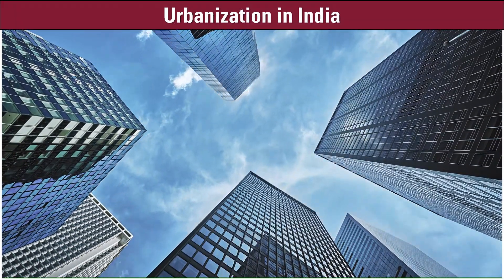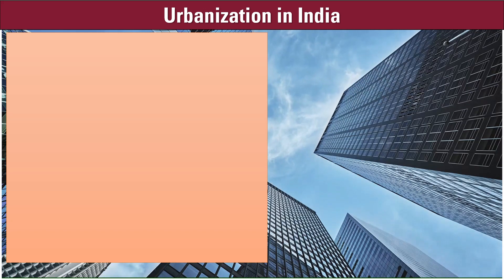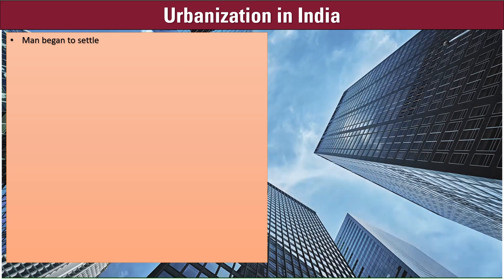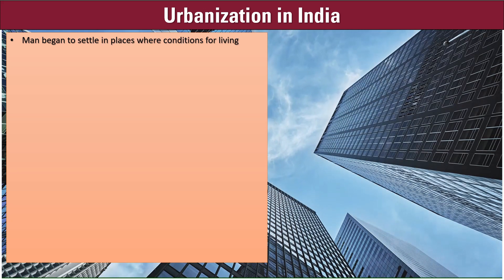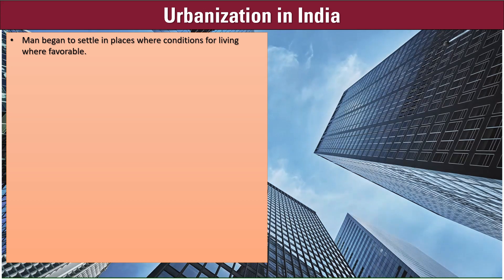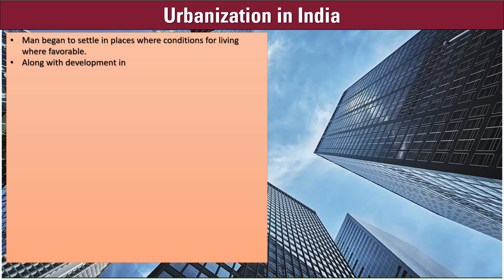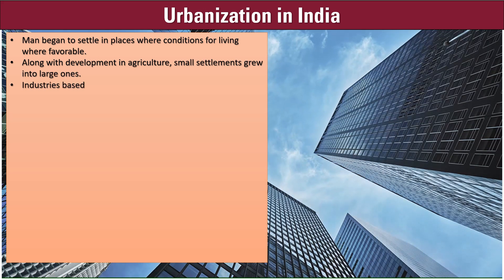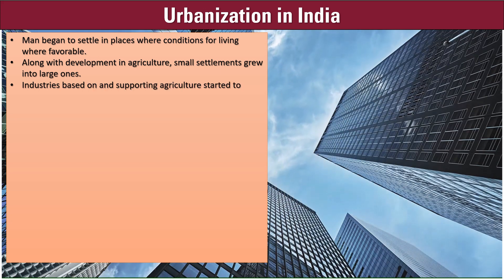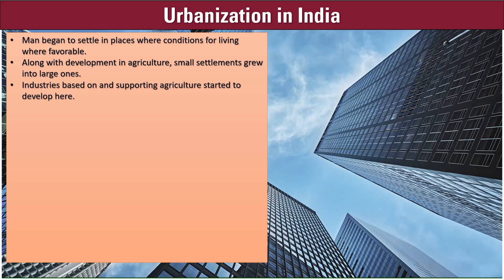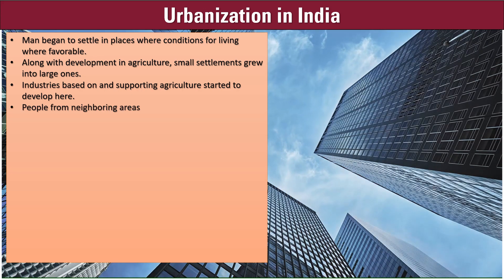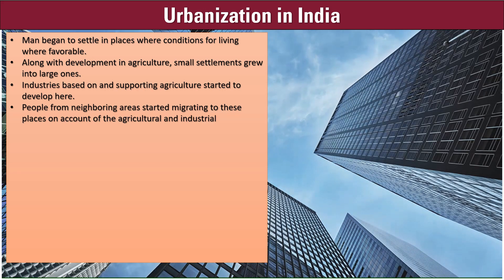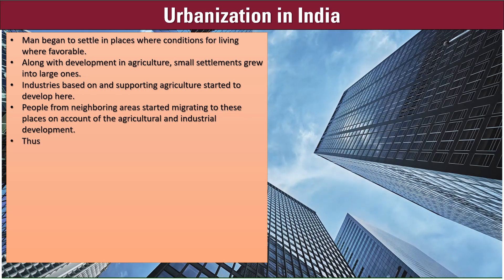Let's understand how rural areas got transformed into urban areas and the meaning of urbanization. Man began to settle in places where conditions for living were favorable. Along with development in agriculture, small settlements grew into large ones. Industries based on and supporting agriculture started to develop here. People from neighboring areas started migrating to these places on account of the agricultural and industrial development.